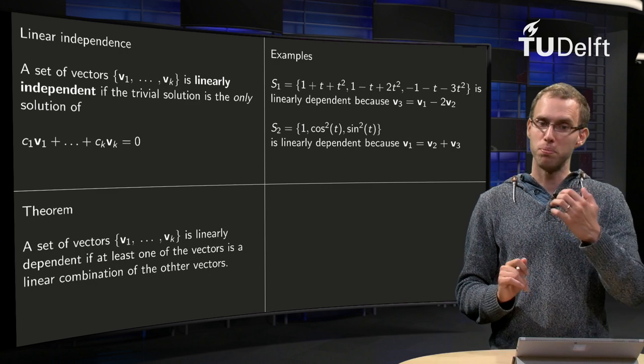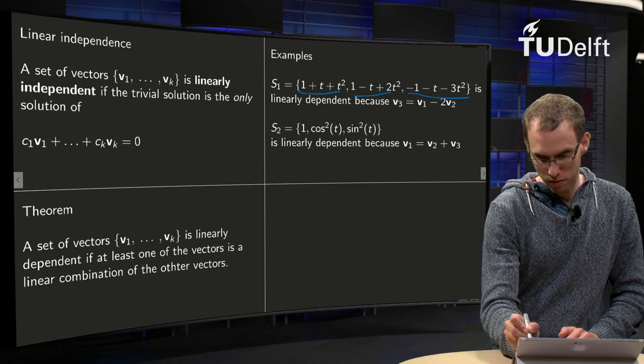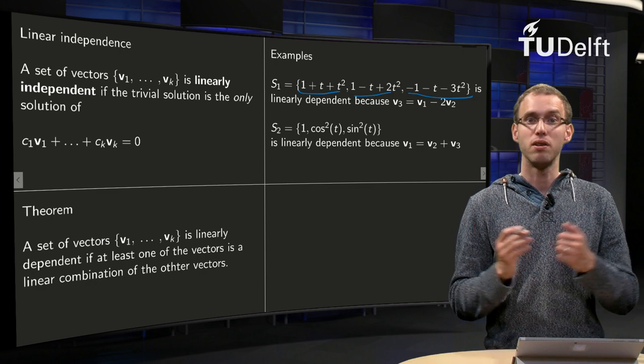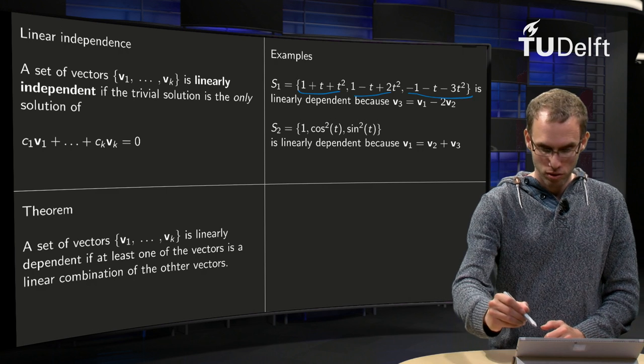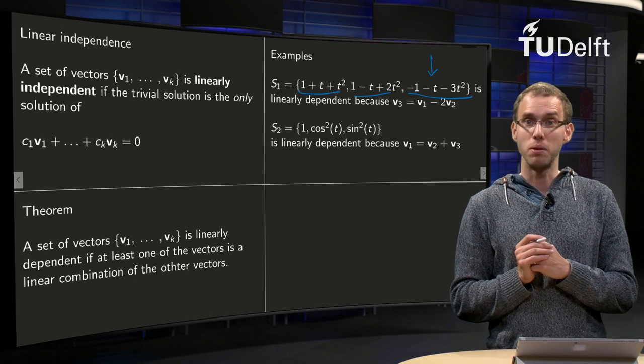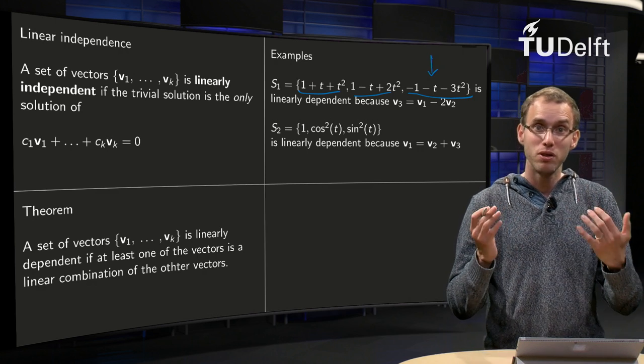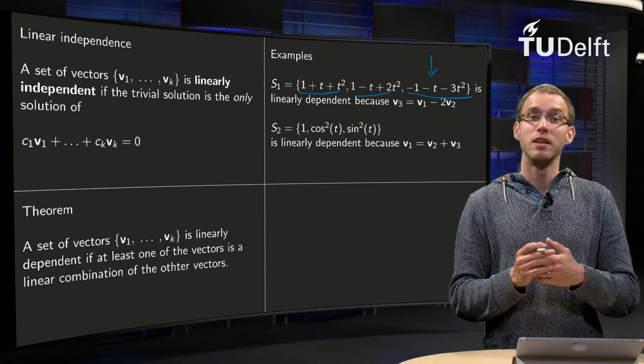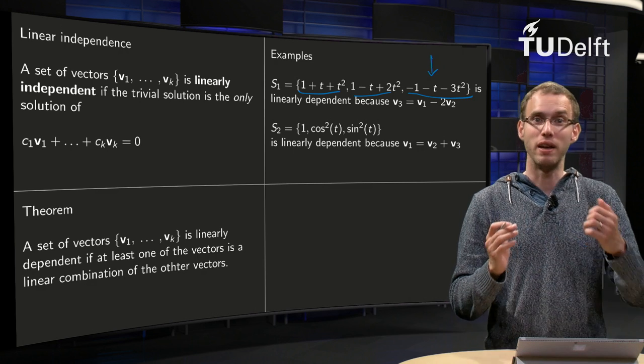We will start with three polynomials, v1, v2 and v3, and we have a set of those polynomials. Then we observe that this third one over here equals v1 minus 2 times v2. So we observe that the third polynomial is a linear combination of the first two. That means that the set consisting of those three polynomials is dependent.